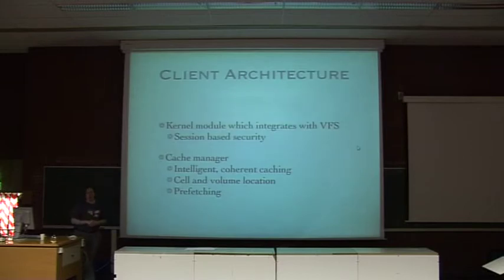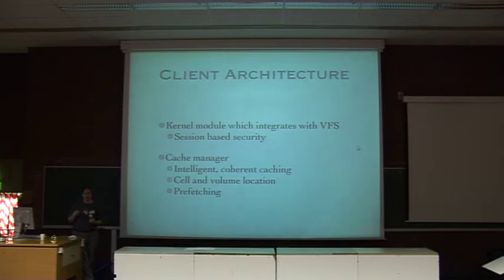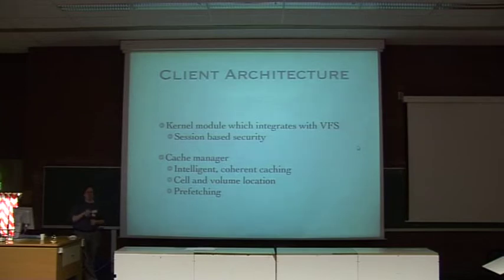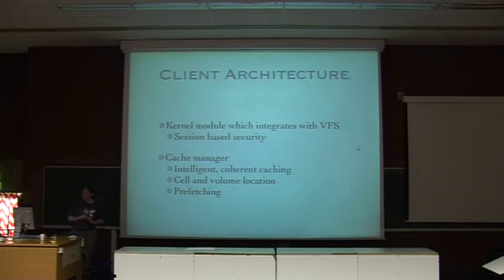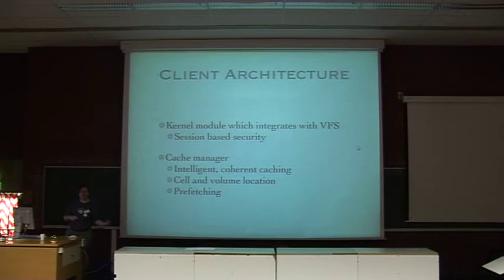The client is made up of two components. There's a kernel module which integrates with the kernel's VFS layer. That kernel module provides session-based security — if you have shared users like root, you can restrict access to a particular area of the file system just to the session that a daemon is running, not all processes running as root. The kernel module is supported by a cache manager, which provides intelligent caching with guarantees of cache coherence through what AFS terms callbacks. That cache manager also supports prefetching — if you've accessed the first 64K of a file, the cache manager will go and ask the file server for the next 64K while you're not doing anything.